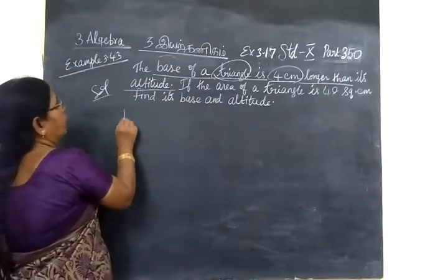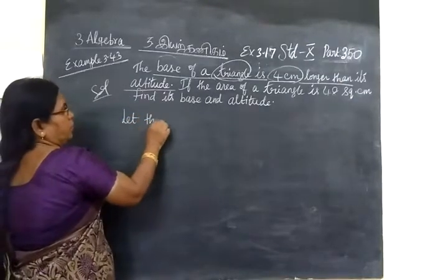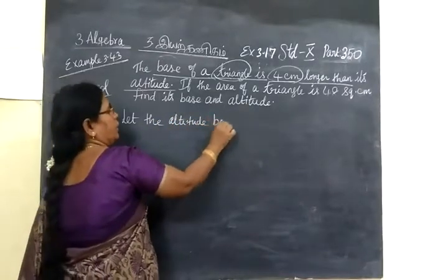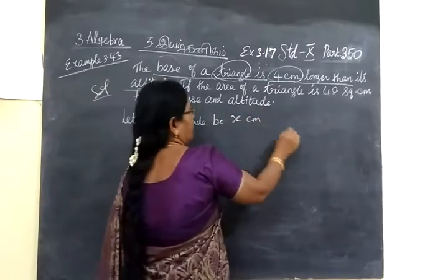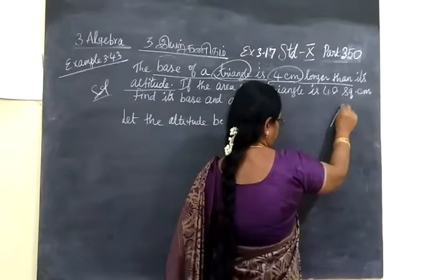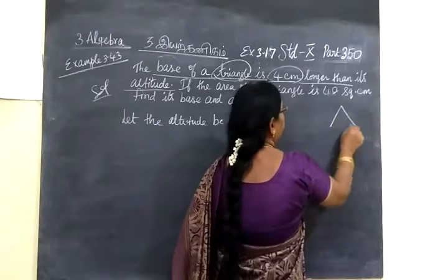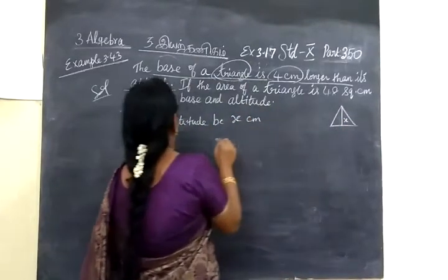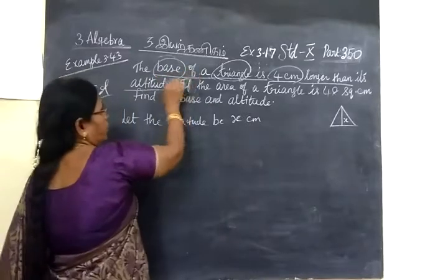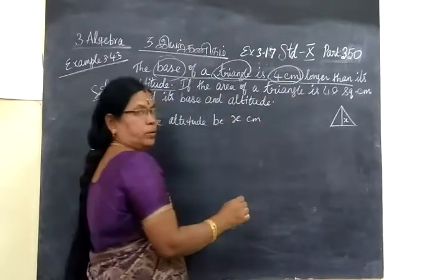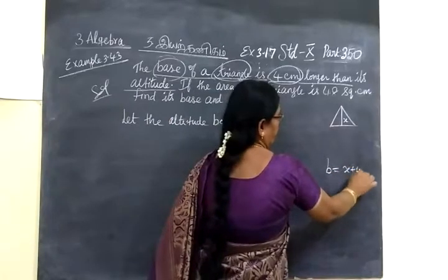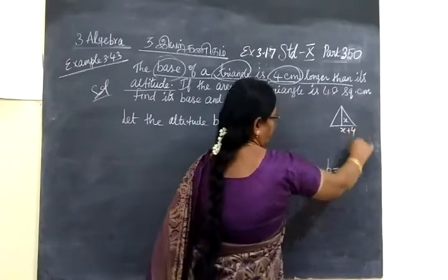Now let the altitude be x cm. So we have given a triangle. In this, altitude is x cm and base is 4 cm more. Base equals x plus 4. So here it is x plus 4.